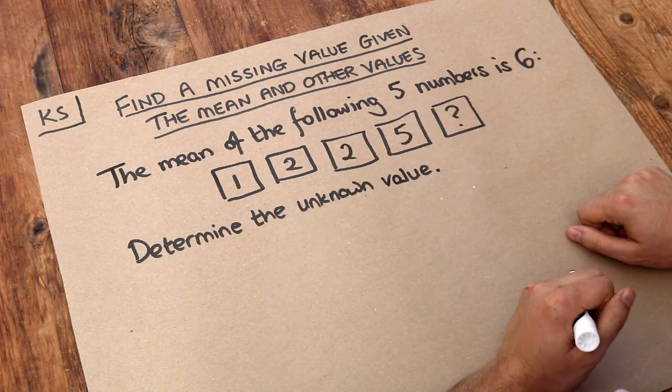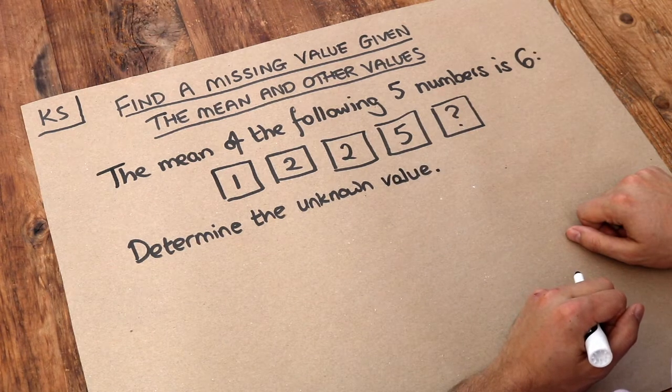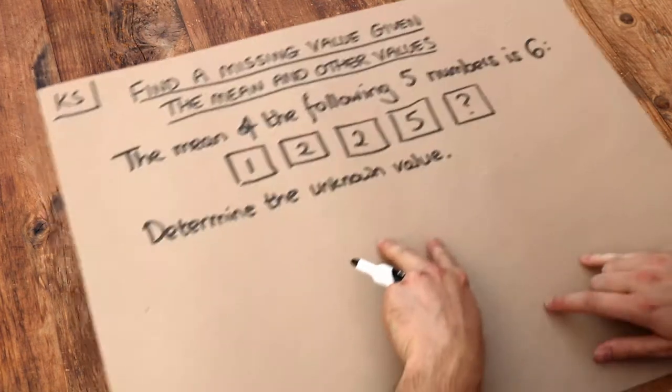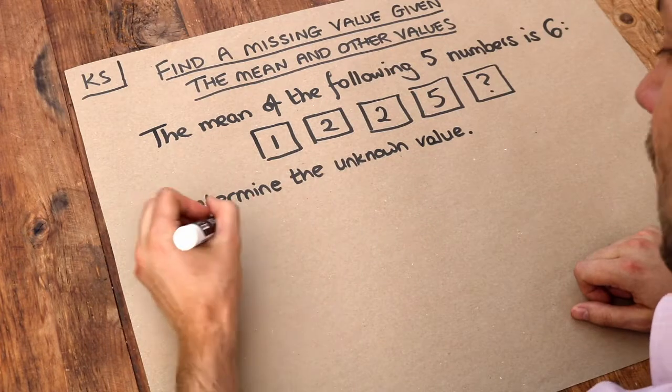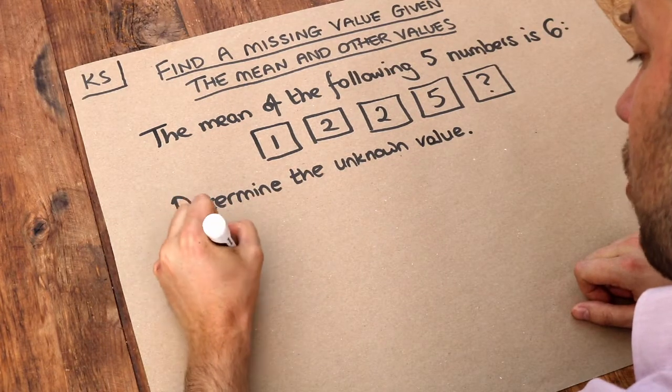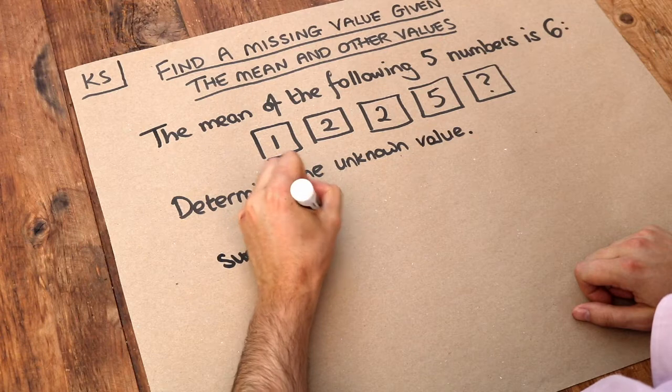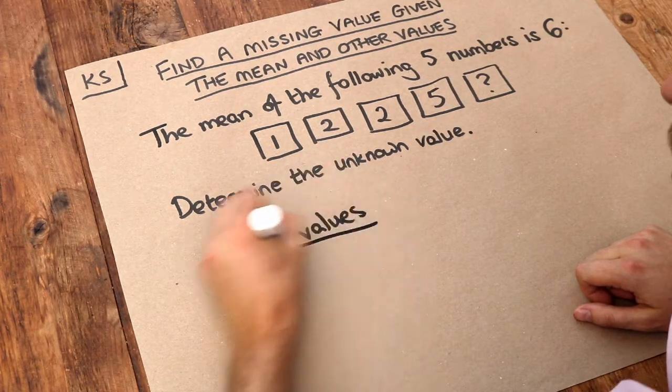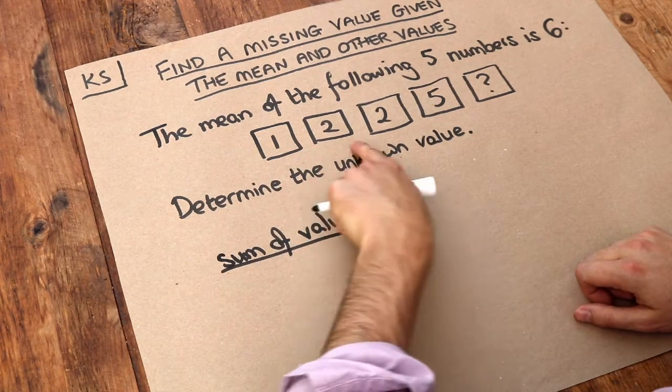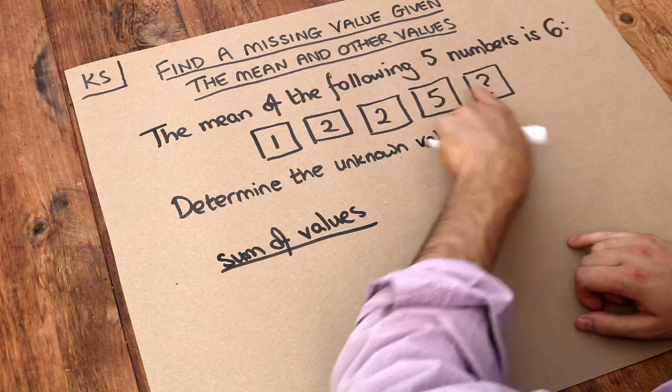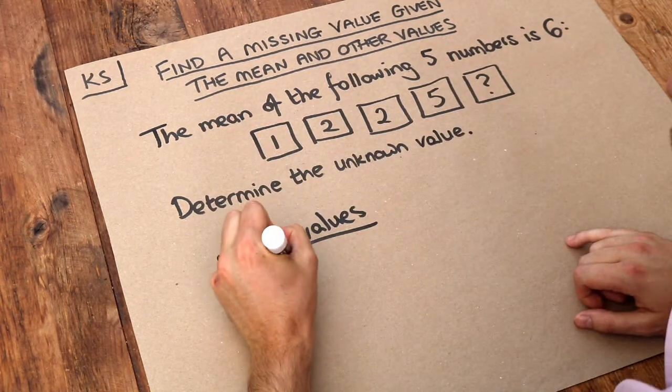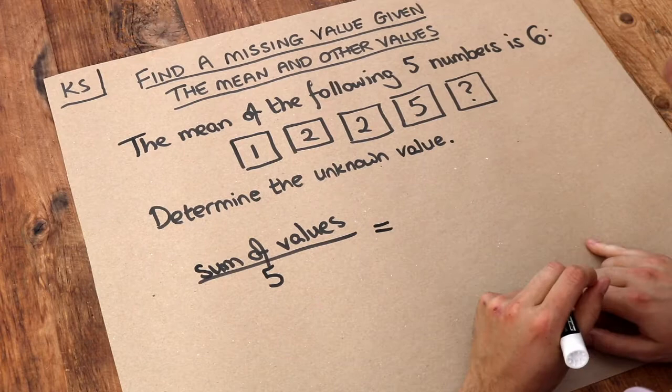Well let's think how we usually calculate the mean of some numbers. If we've got five numbers, how would we find the mean? Well we'd add up the numbers, so the sum of the values. We'd add them up, then we'd divide that by how many values there are. Well we're told there's five numbers, one, two, three, four, five. We would divide it by five, and that would give us the mean.